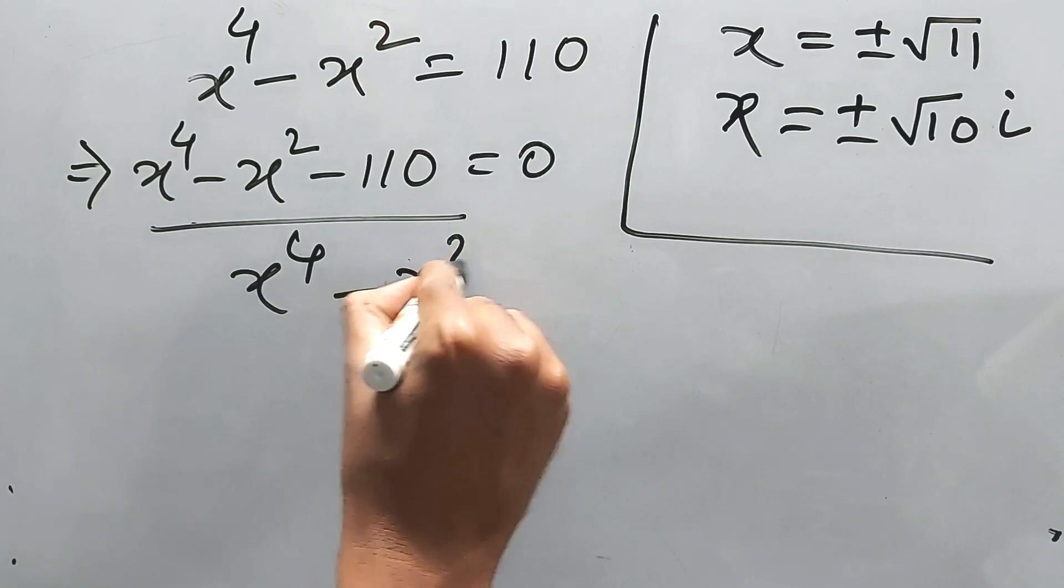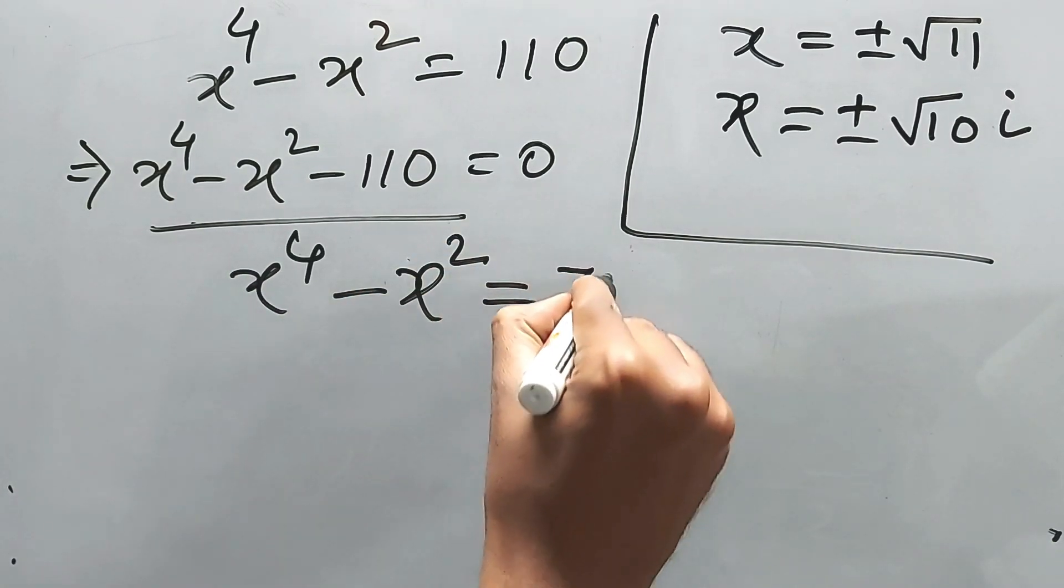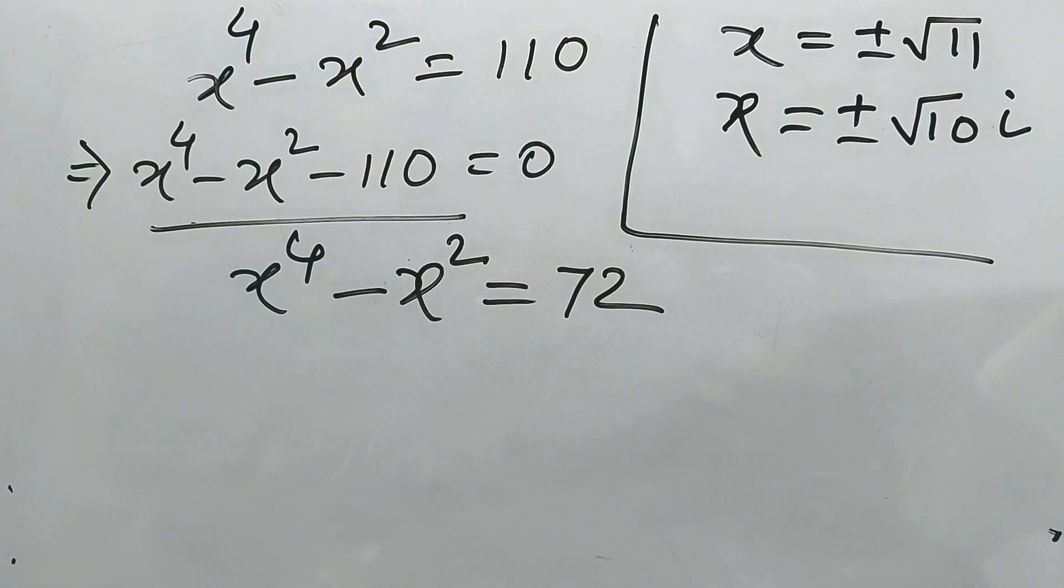...minus x squared is equal to 72. Oh well, I think you can do it, right? This is an easy one. Yeah, definitely. 72, just take it.